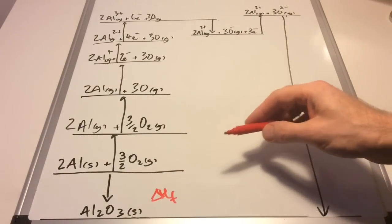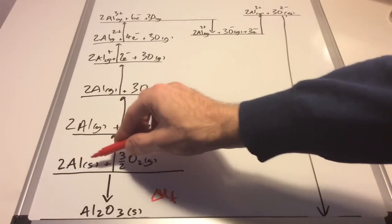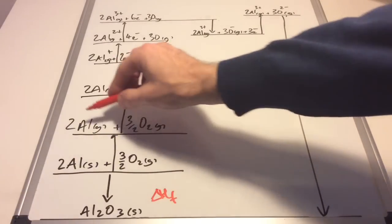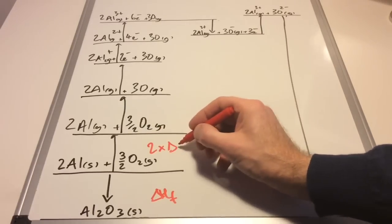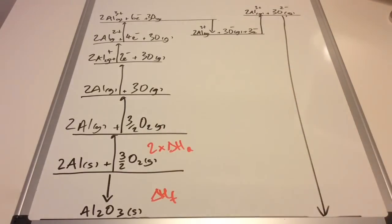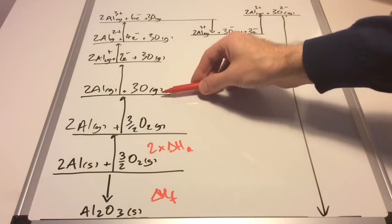That's the two aluminium solids going to two aluminium gas, so that's two times the enthalpy change of atomization for aluminium.